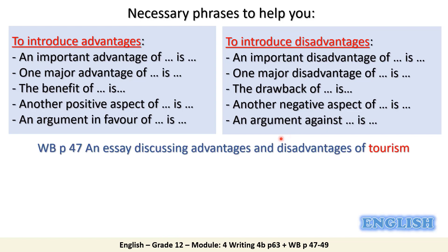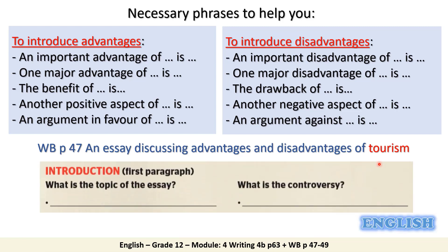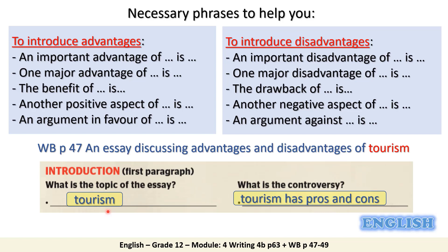Now let's open workbook page 47. The essay is about the advantages and disadvantages of tourism. In the organizer, the topic is tourism, and the controversy is that tourism has both advantages — or pros — and disadvantages — or cons.